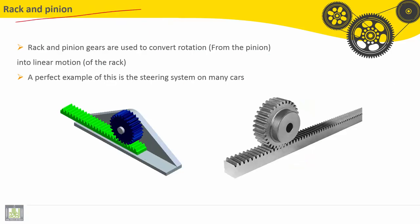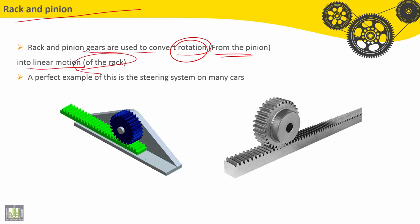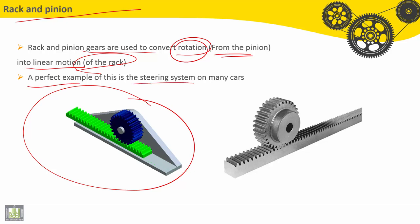How about rack and pinion? Rack and pinion gears are used to convert rotation from the pinion into linear motion of the rack, as shown in this animation. A perfect example of this is the steering system on many cars.